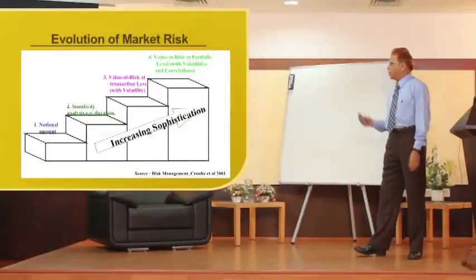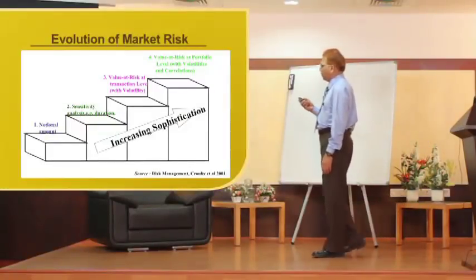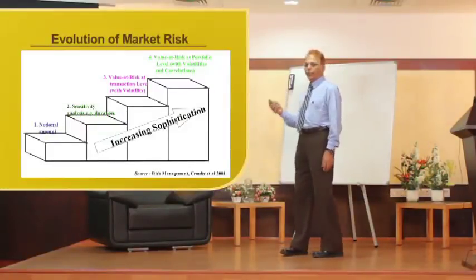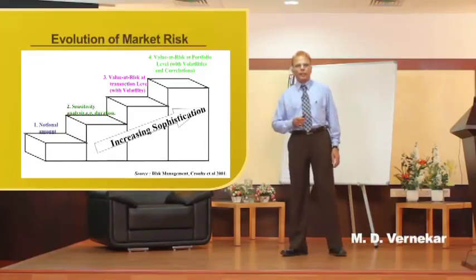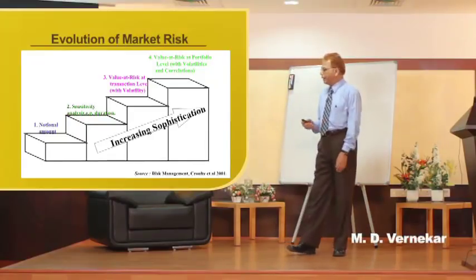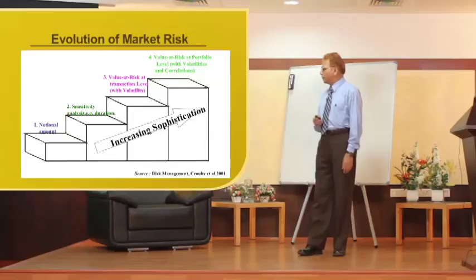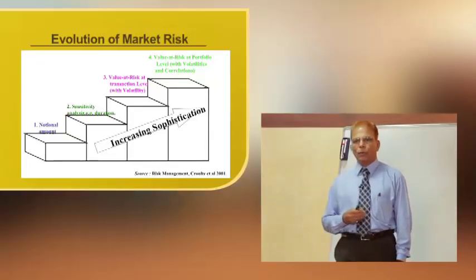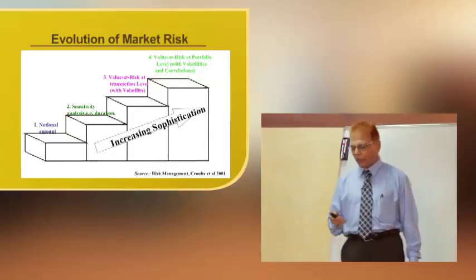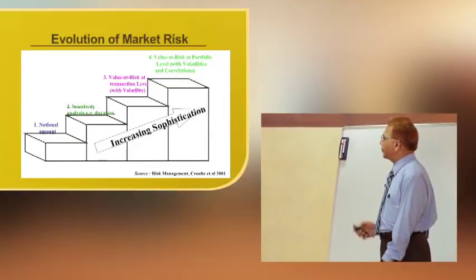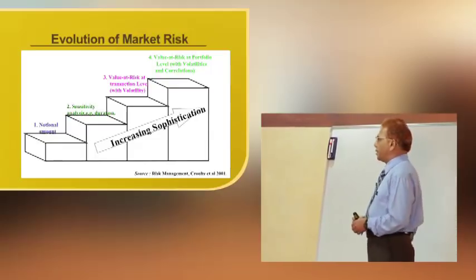Simpler techniques to measure market risk use price sensitivity like duration, whereas the advanced techniques like VAR (Value at Risk) use probabilities and also correlations across different products.